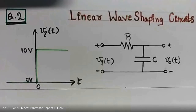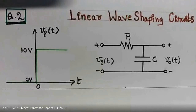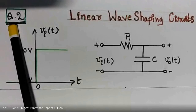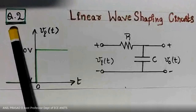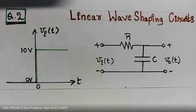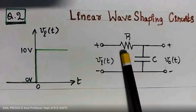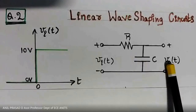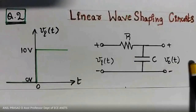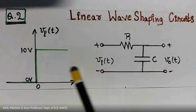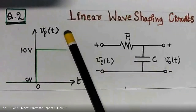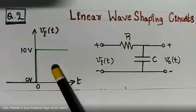Welcome to the course Electronic Circuits and Analysis One. We are in Unit Number One: Linear Wave Shaping Circuits, at Problem Number Two. In this problem, the circuit given is an RC circuit where you are taking the voltage across the capacitor V_out, and the input is V_i of t — a step input signal.